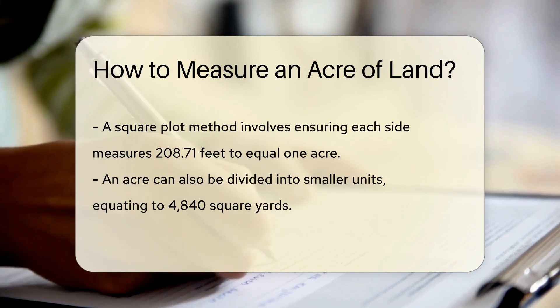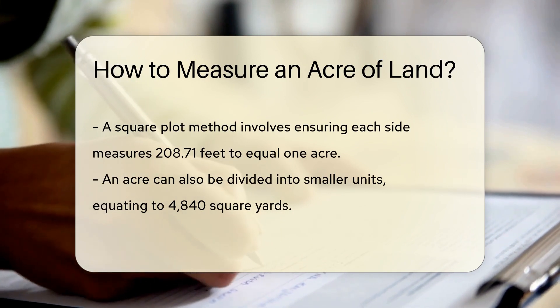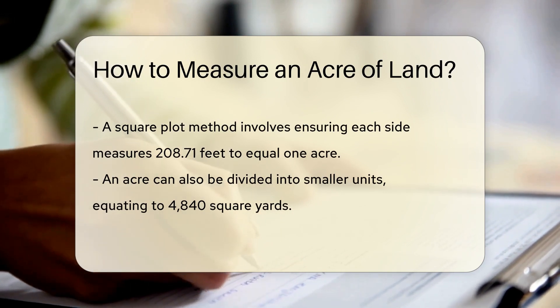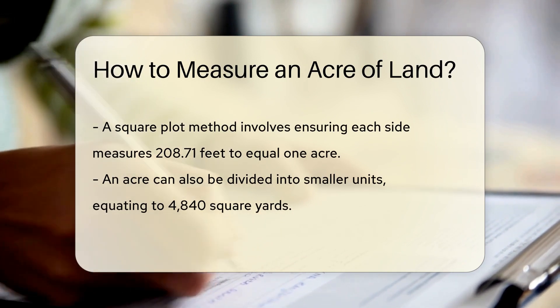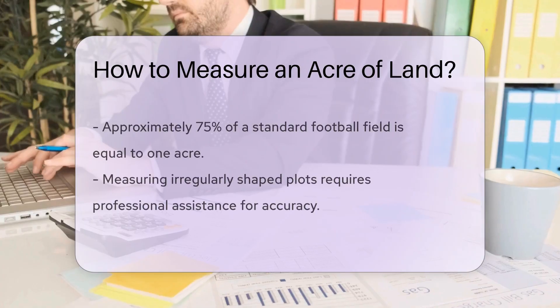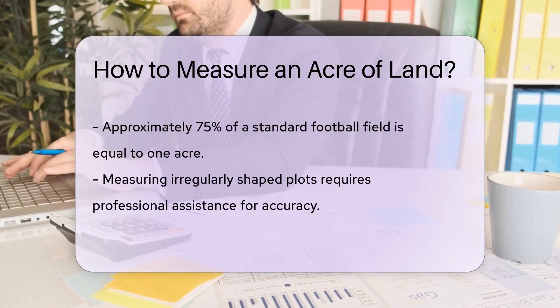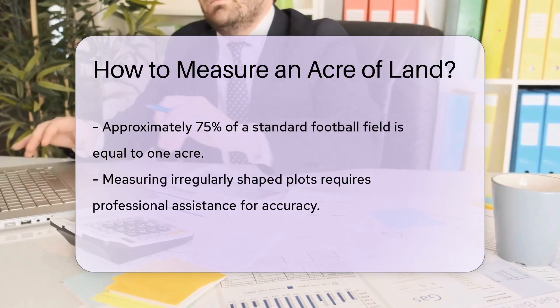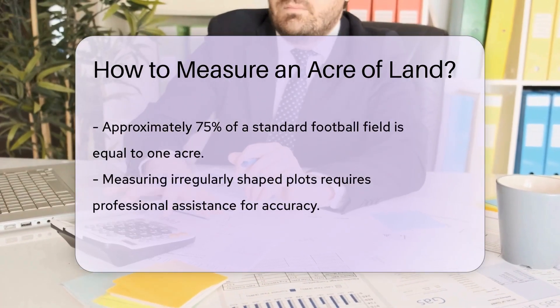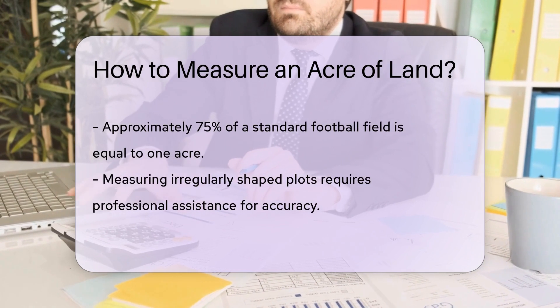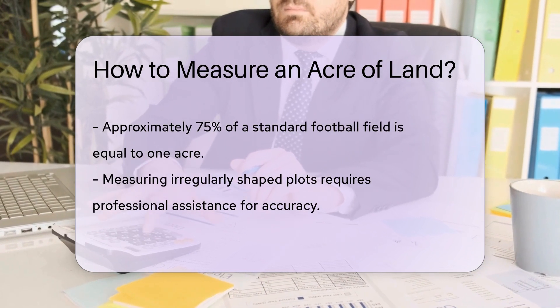Another method is to divide an acre into smaller units. For example, one acre is equal to 4,840 square yards, or approximately 75% of a standard football field.